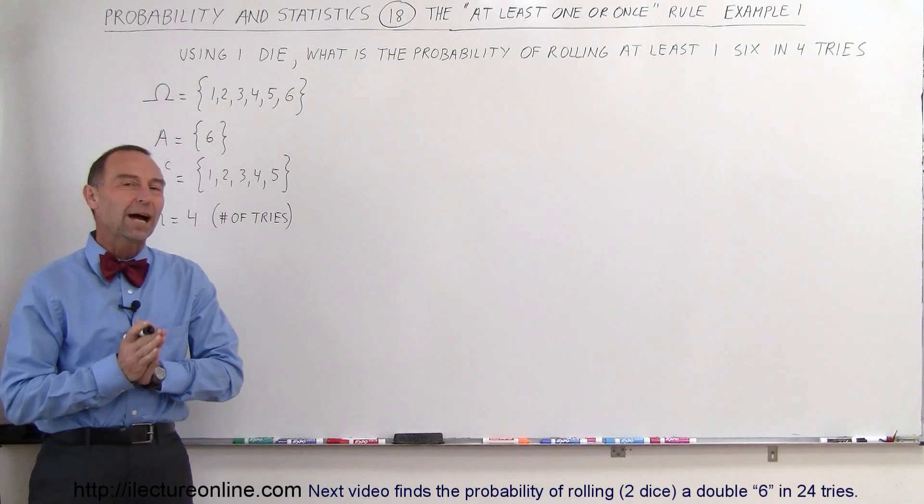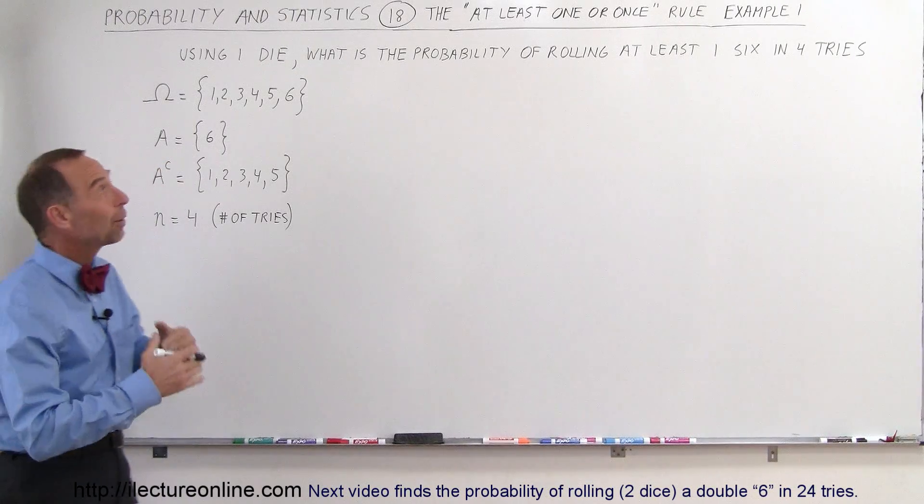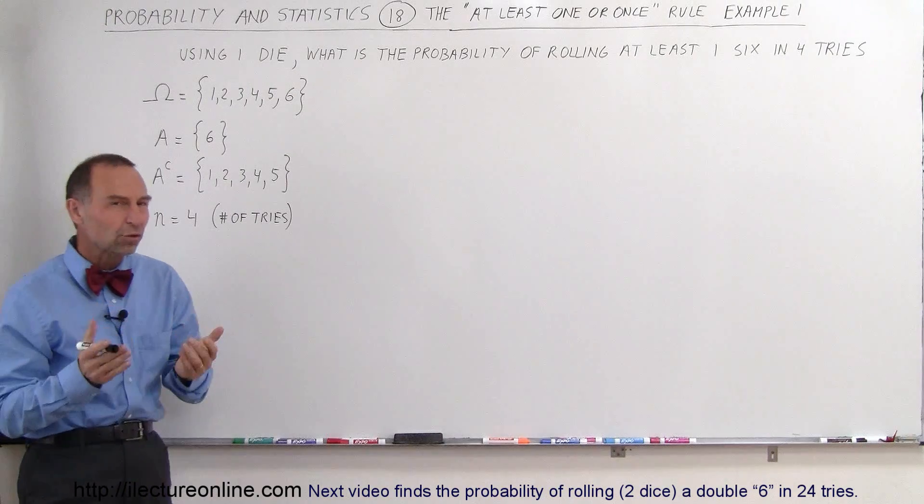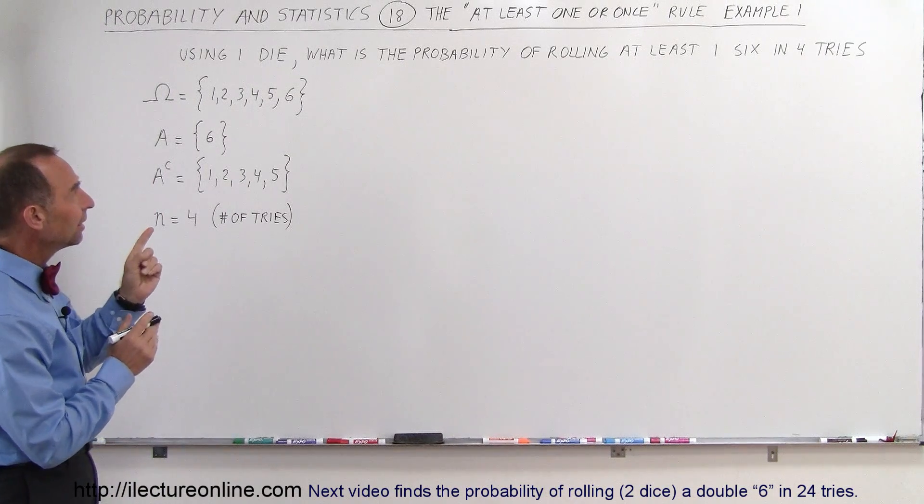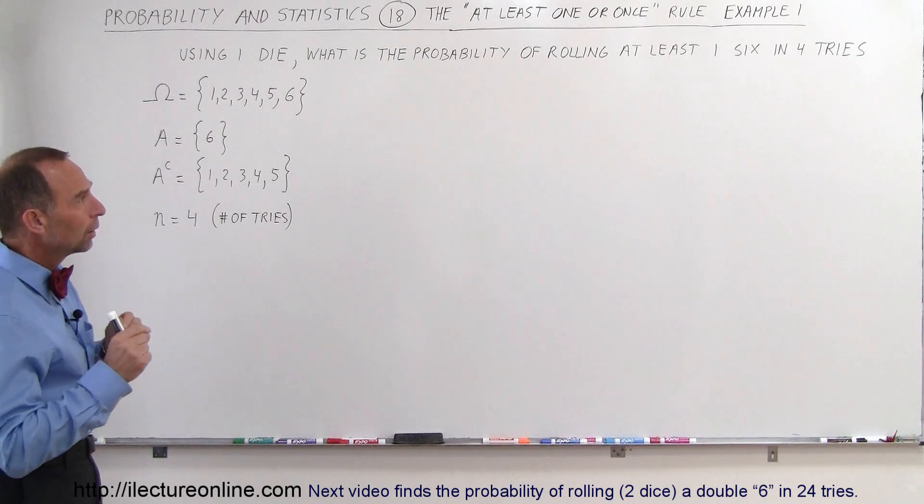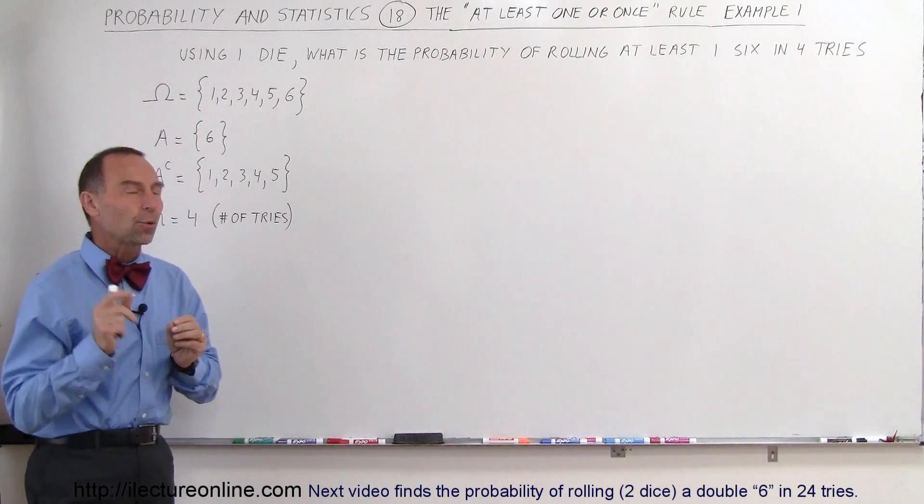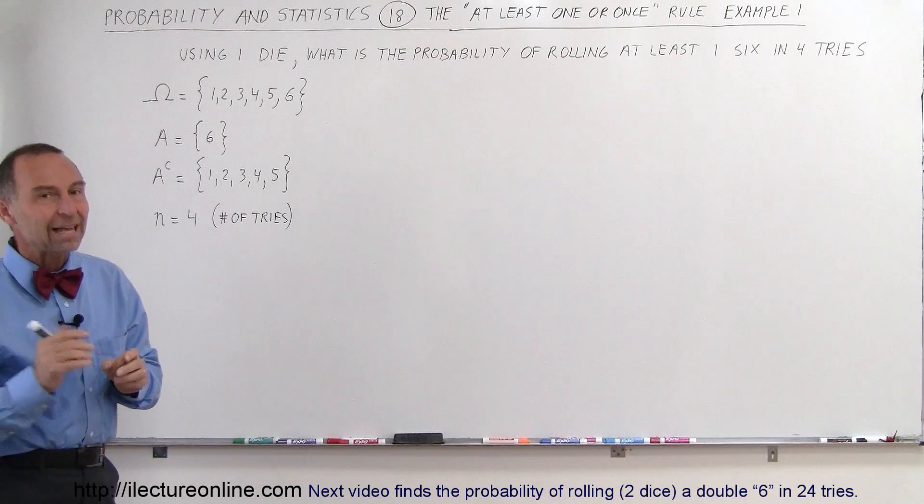Welcome to iLectureonline. We're going to do an example on what we call the at least one rule. In this case, we have a single die and we want to know the probability of rolling at least one six in four attempts.